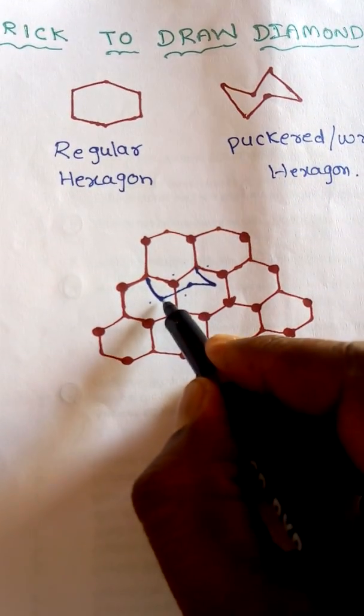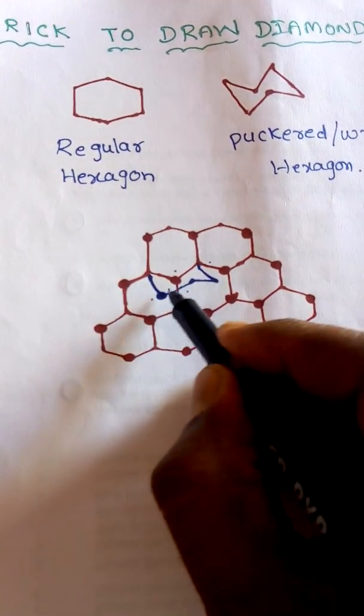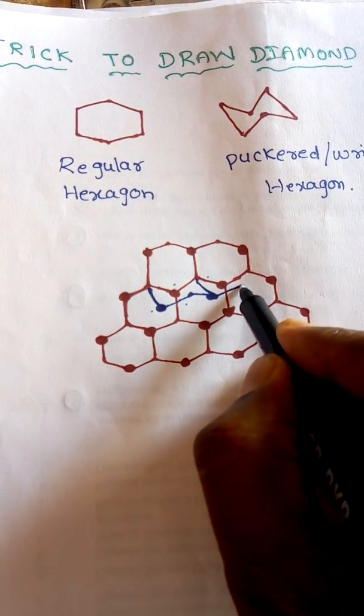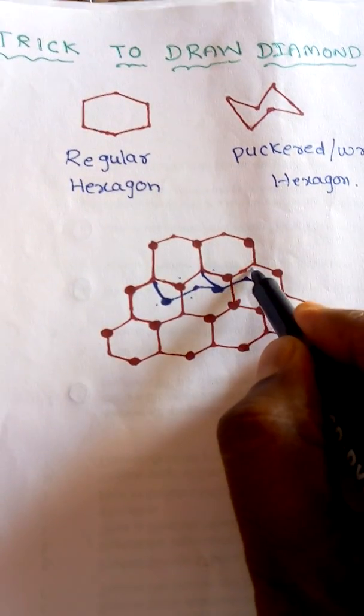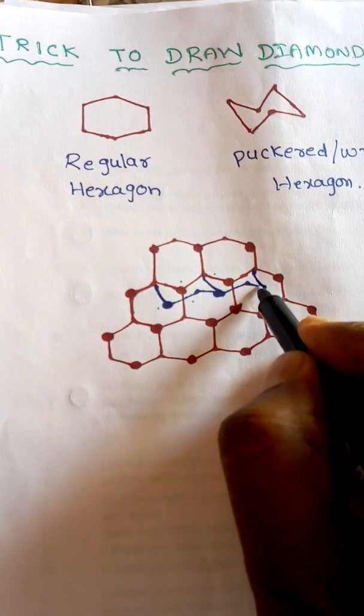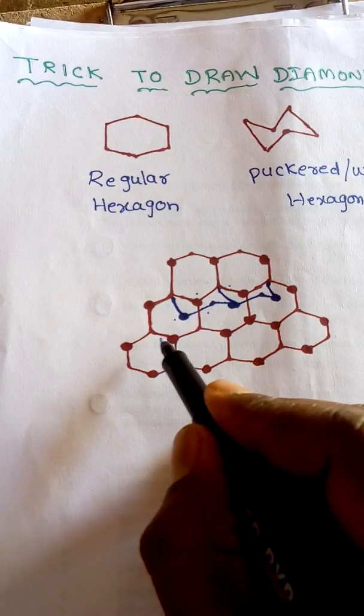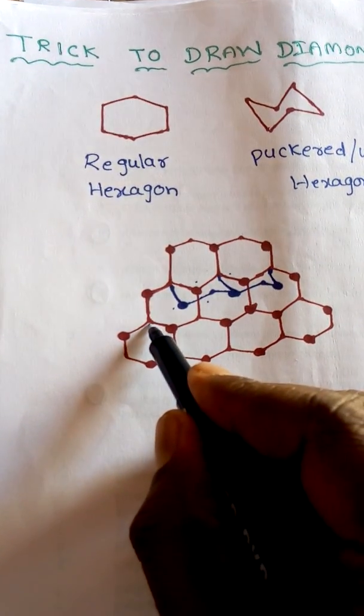Next, hexagon is formed and we have to mark the alternate carbons like this. Again, we have to extend like this. Alternate carbons. Like that. Here also we have to do the same thing.